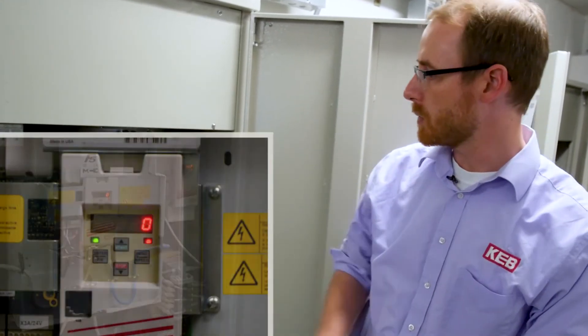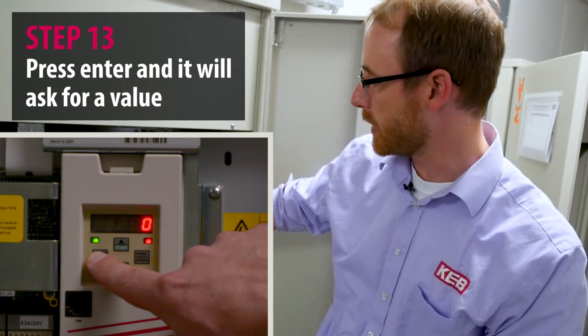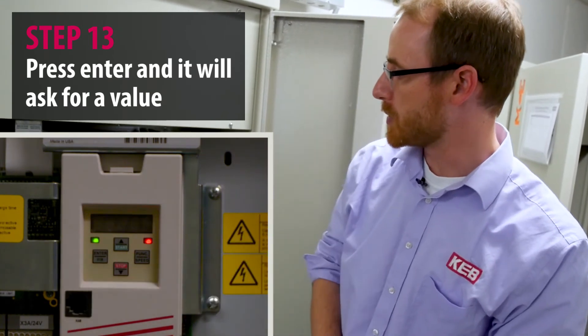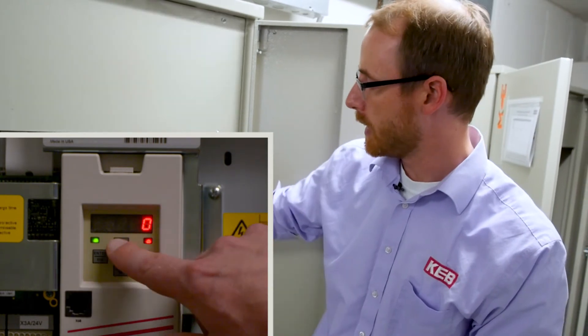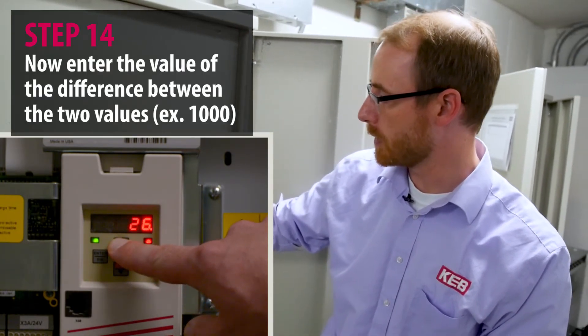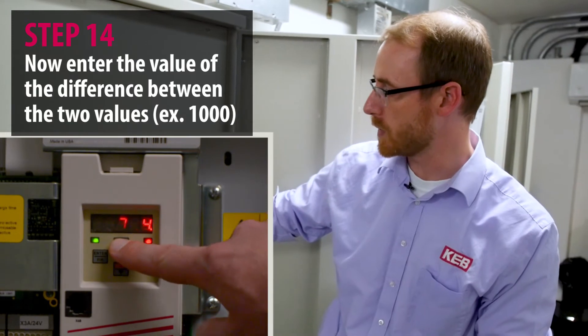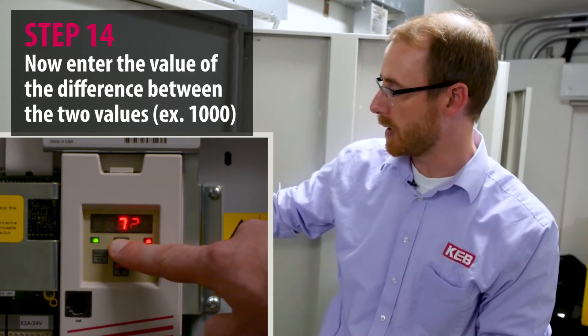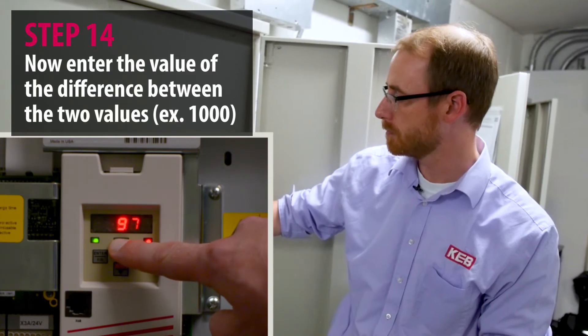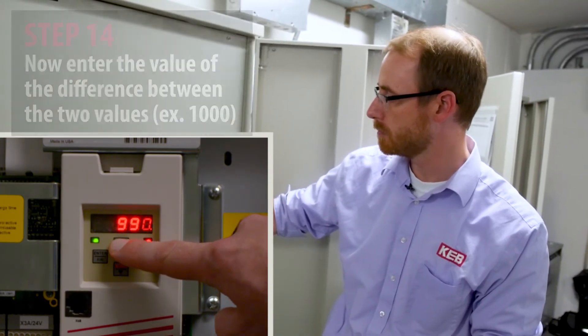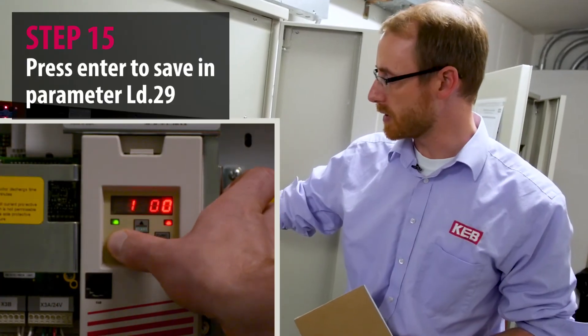So we press enter to complete the process. That will display value and it brings us to parameter LD29. And that is where you put in the acceleration torque, the difference between the acceleration and the high speed torque, which we determined to be 1000 newton meters. Now press enter to save.